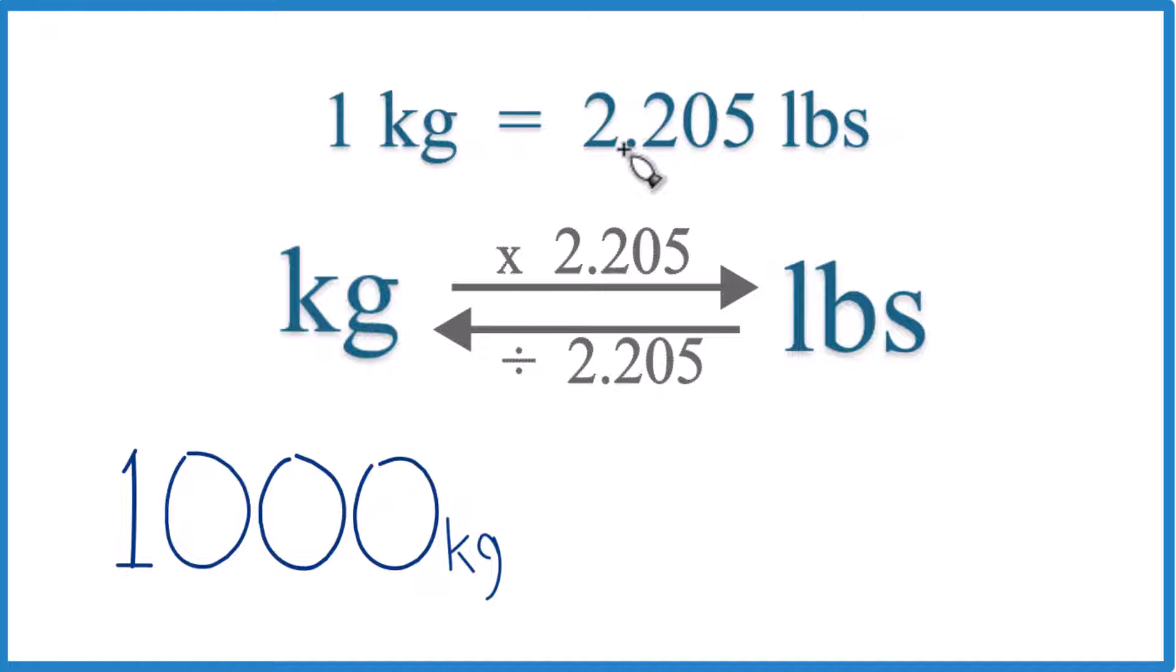So if one kilogram is 2.205 pounds, a thousand kilograms is just a thousand times this number here. We call this a conversion factor. We use it when we go from kilograms to pounds or pounds to kilograms.